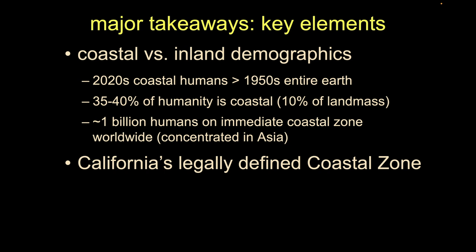Depending on what definition we use, about a third to about 40% of the planet live in the coastal zone. But roughly only about 10% of the land area of the earth falls into one of these coastal zones. So again, disproportionate concentration, disproportionate number of people, disproportionate amount of activity in the coastal zone relative to the rest of the terrestrial world and marine world for that matter.